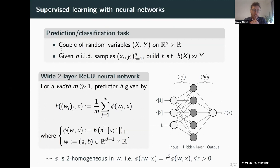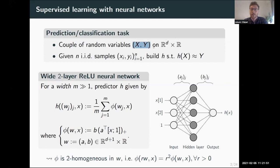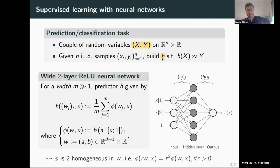We will be in a similar setting as Gael presented at the beginning of his talk, which is the setting of supervised machine learning. We have a couple of random variables x and y, where x lives in R^d — d can be typically large — and y is just a response variable. Given n i.i.d. samples, we want to build a function h that predicts the correct output given input x, which has not necessarily been observed previously. In this talk, we will focus on two-layer neural networks.